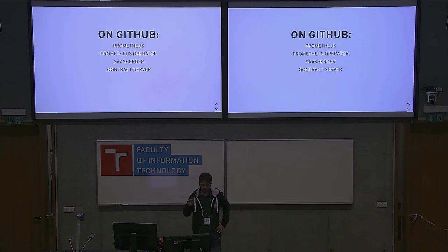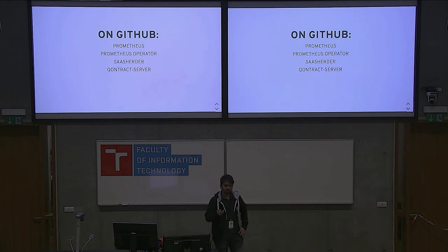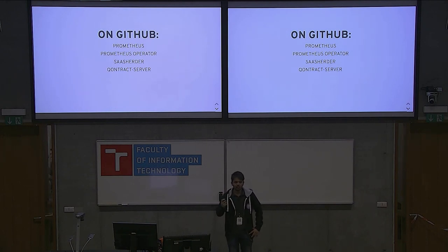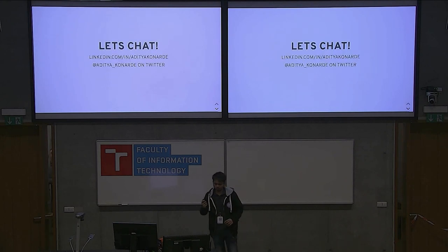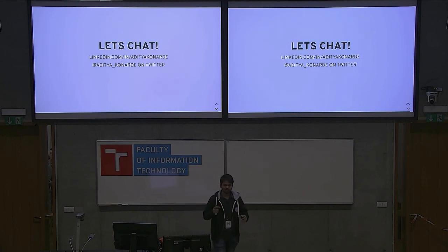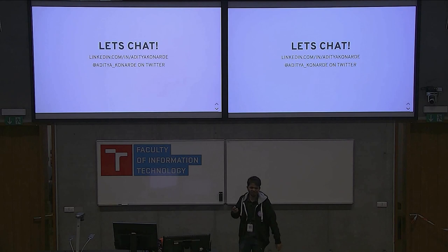On GitHub, go to Prometheus, Prometheus operator, SaaS Herder, and contract server. These are the repos you should check out. Ping me if you have a problem with any of these — I work on all of them and try to maintain them. Let's chat. This is my LinkedIn, this is my Twitter — take out your phones and save it, then talk to me later.